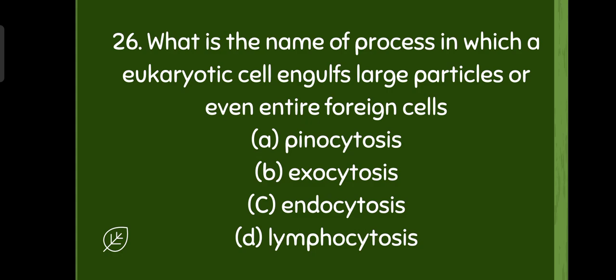What is the name of process in which a eukaryotic cell engulfs large particles or entire foreign cells? It is phagocytosis. So here there's a mistake in the options. The correct answer is phagocytosis. Phagocytosis, cell eating process.